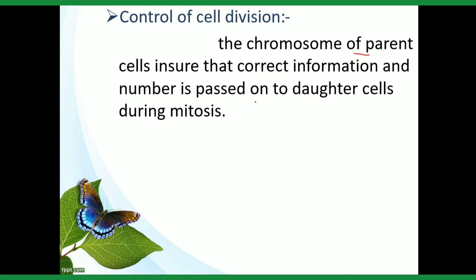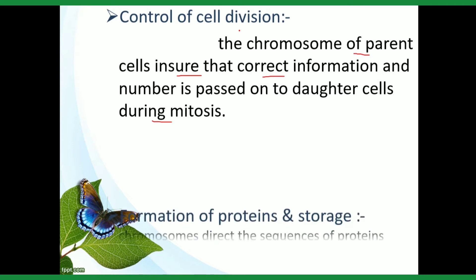The third function is control of cell division. The chromosomes of the parent cell ensure that the correct information and number of chromosomes are passed on to the daughter cell during mitosis. Ensuring correct information transfer from parent cell to daughter cell is also a function of chromosomes.